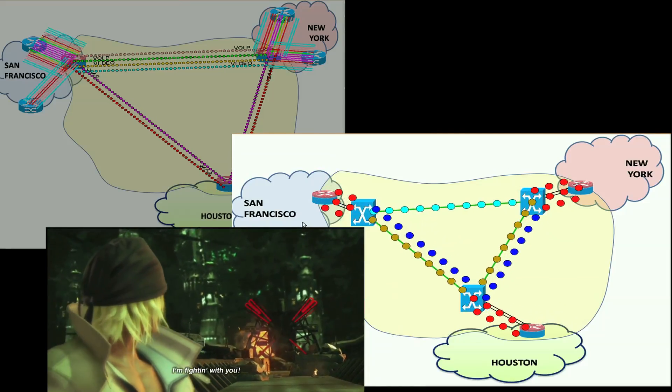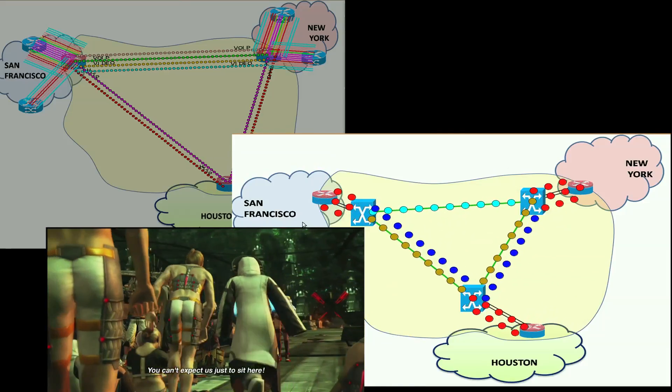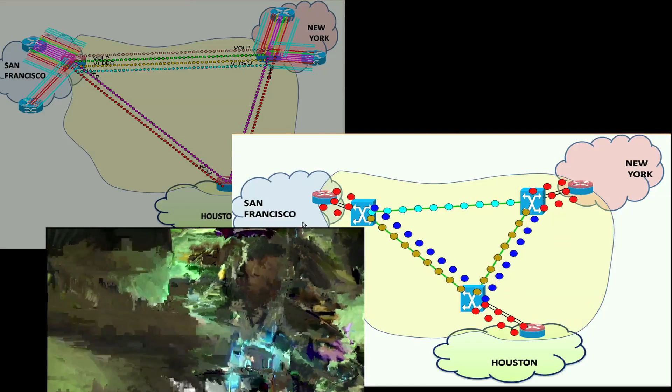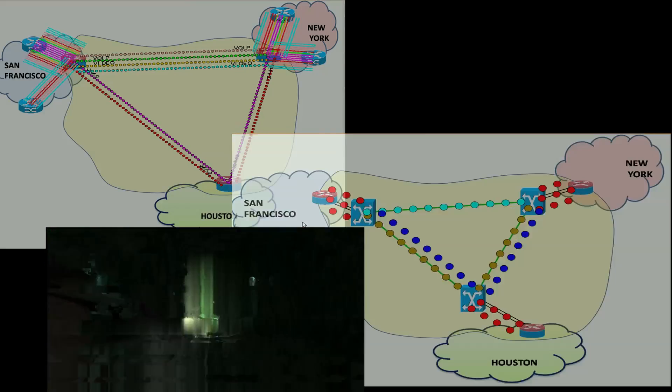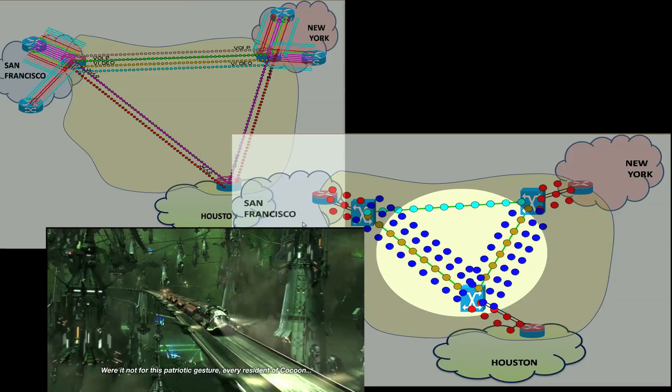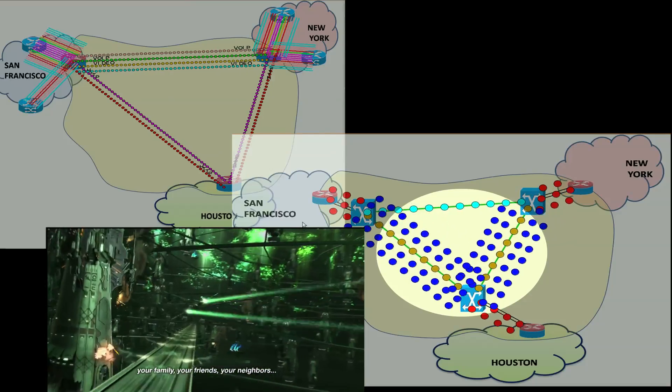But then we increase the traffic through the video circuit, which congests the links, packets get dropped, and the video playback suffers. But at the same time, the controller detects congestion in the network and compensates for it by increasing the bandwidth of the video circuit, and the video plays smoothly again.